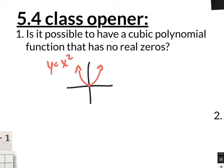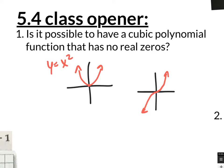What about x cubed? What does that look like? That snake-like curve. And does that one have an end behavior both up? No — it has one down here and one up here. Unless you have a negative leading coefficient, then that would flip it. But we know that cubic functions are something like this. So what I'm asking is, is it possible to have one of these snake-like curves to not cross the x-axis? No way. It has to cross the x-axis.